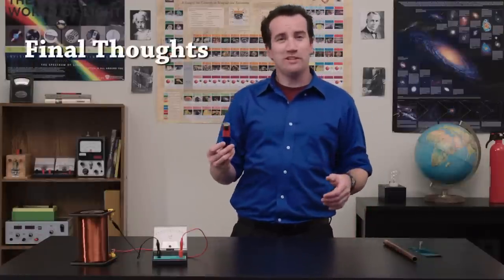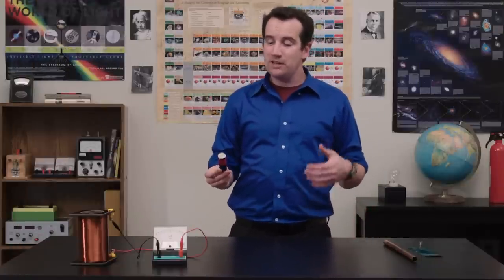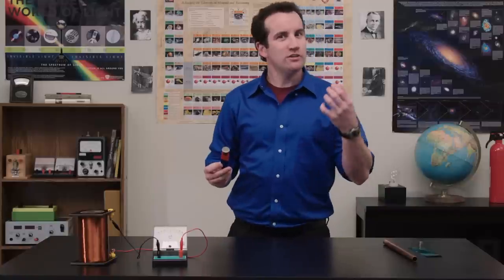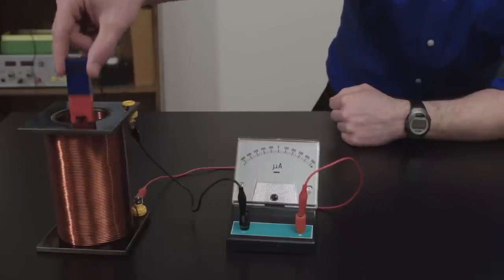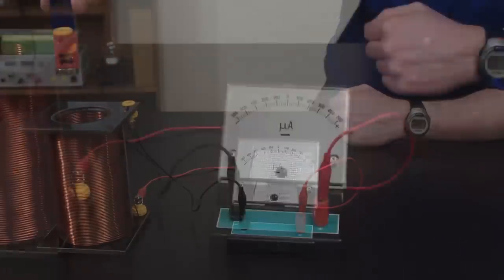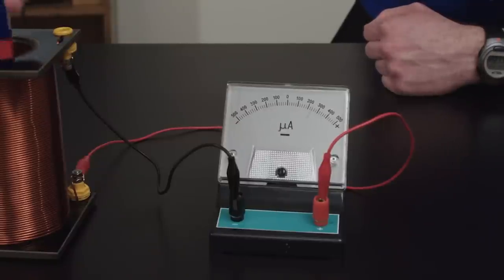Of course, the reason we need to know about electromagnetism is because it is used to generate current. For example, when I dip this magnet into this coil, it generates a few microamps, which can be seen on this microamp meter here.